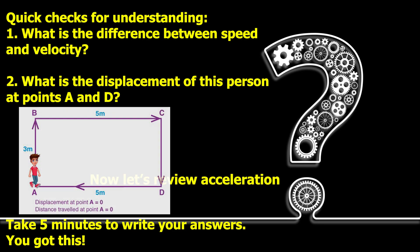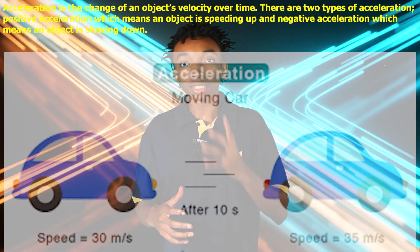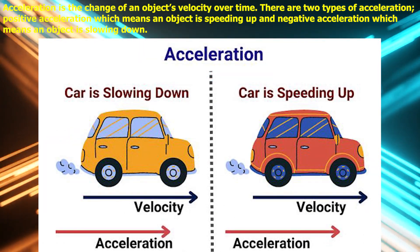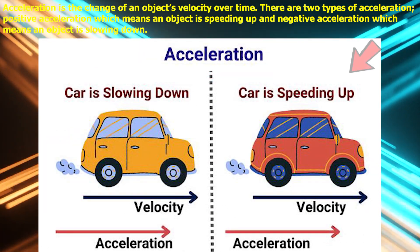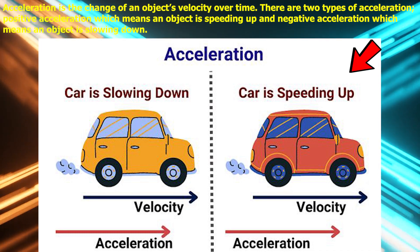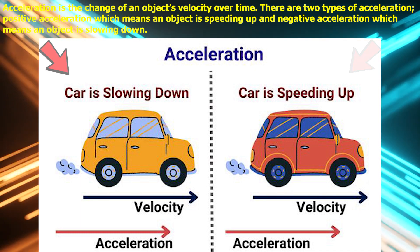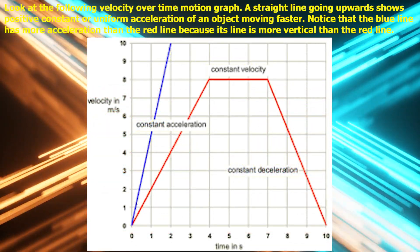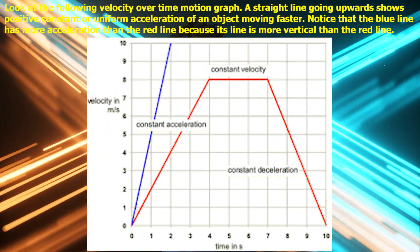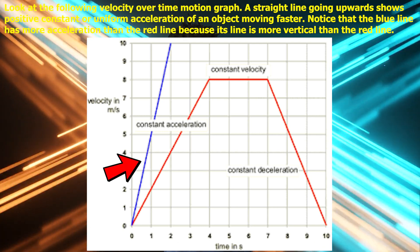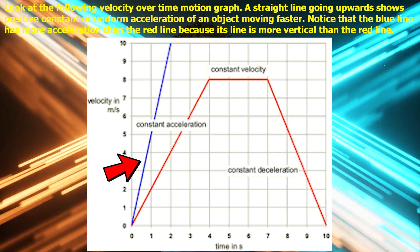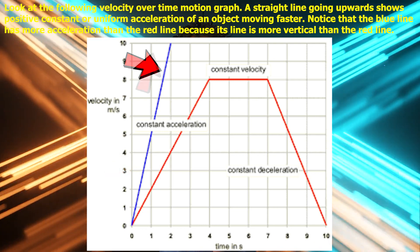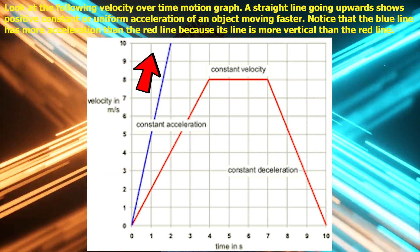Now let's review acceleration. Acceleration is the change of an object's velocity over time. There are two types of acceleration. You have positive acceleration, which means an object is speeding up, and you have negative acceleration, which means an object is slowing down. Think of the following velocity over time motion graph. A straight line going upward shows positive constant or uniform acceleration of an object moving faster. Notice that the blue line has more acceleration than the red line because its line is more vertical than the red line.